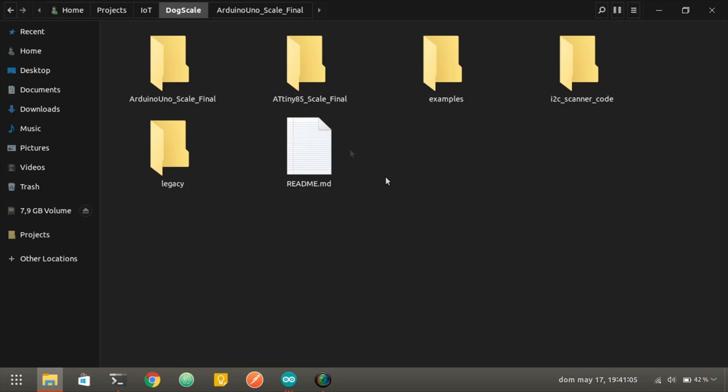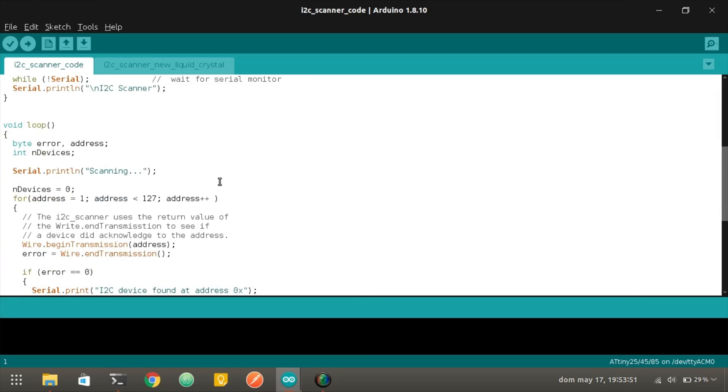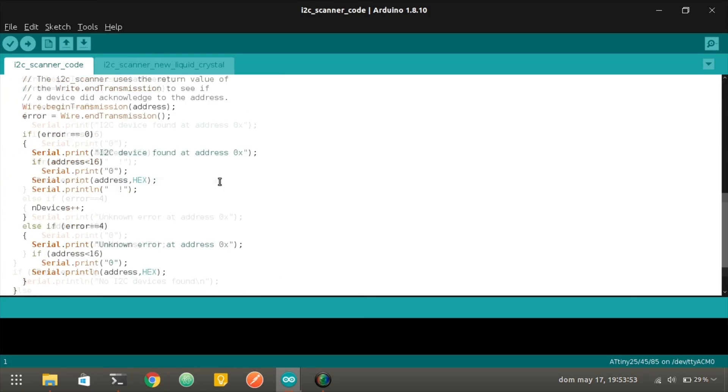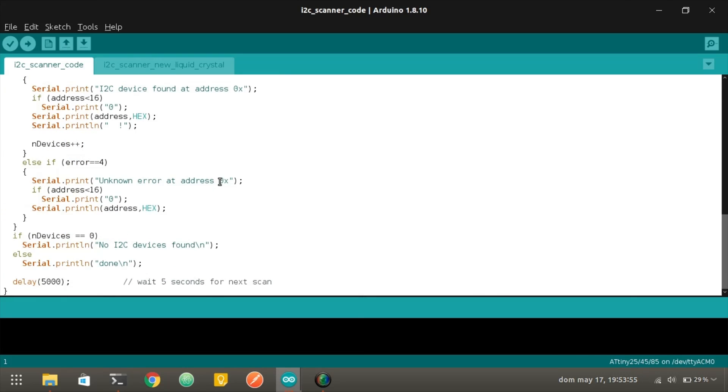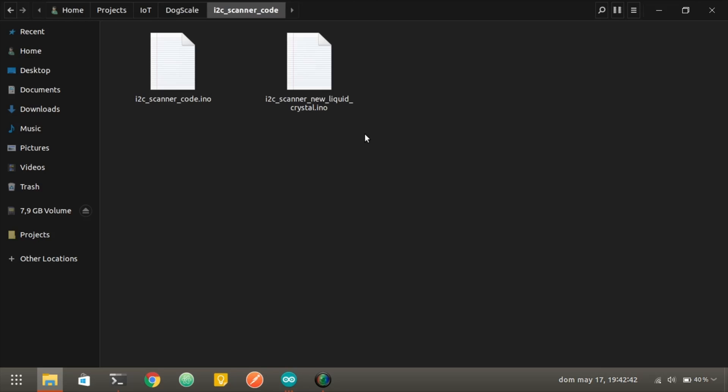Here you can see the contents of the GitHub repository. These two are the folders that contain the code for the two versions of the scale. Additionally, I added this I2C scanner code, which by the way I didn't write, but it will help you determine the HEX address for your I2C module in your LCD screen, which will be necessary later.